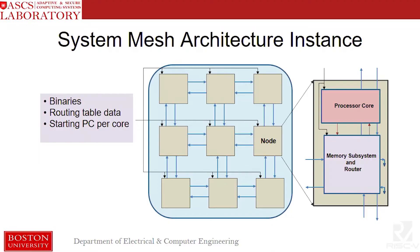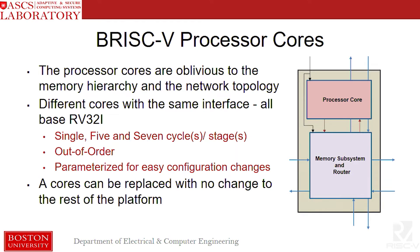Now I'll get into the details of what the processors look like. All of the processors are designed to fit into an SoC, provided you give them their own binaries, routing tables, and a starting PC per core. The processor cores are all base RV32I. They're oblivious to the memory hierarchy and network topology. They're all parameterized, and you can change around those parameters and swap them in and out with no change to the rest of your platform.